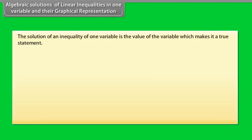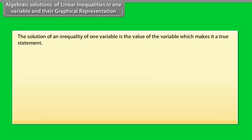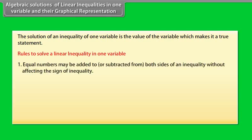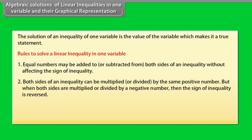Algebraic solution of linear inequalities in one variable and their graphical representation. The solution of an inequality in one variable is the value of the variable which makes it a true statement. Rules: Rule 1 — equal numbers may be added to or subtracted from both sides of an inequality without affecting the sign of inequality. Rule 2 — both sides of an inequality can be multiplied or divided by the same positive number, but when both sides are multiplied or divided by a negative number, the sign of inequality is reversed.